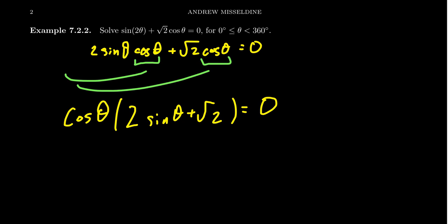We could have factored out a square root of 2 if we wanted to, but I think we'll just leave it alone. It'll be just fine because now we have a product of two things that equal 0.